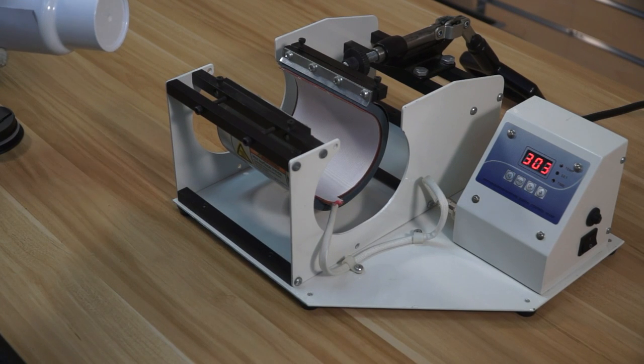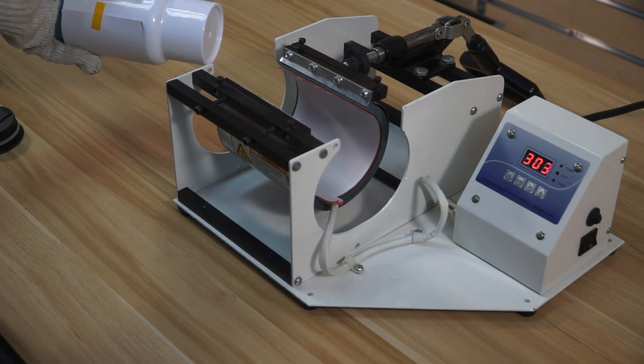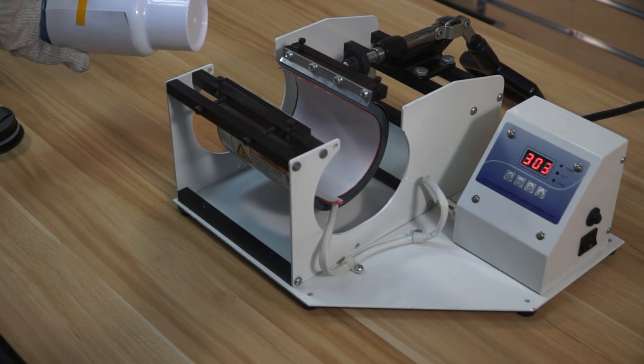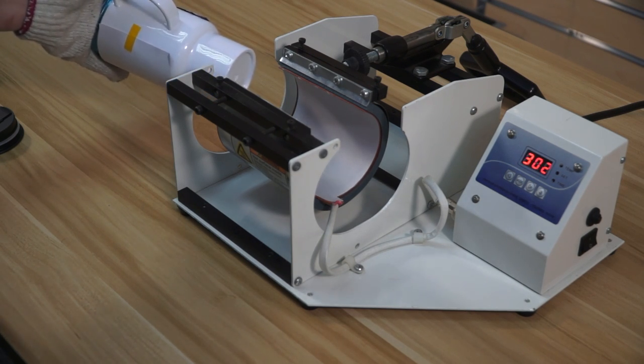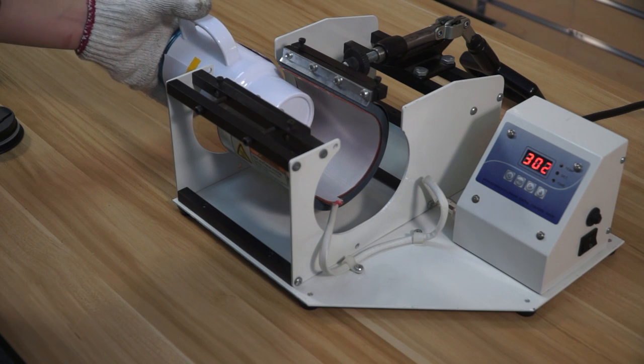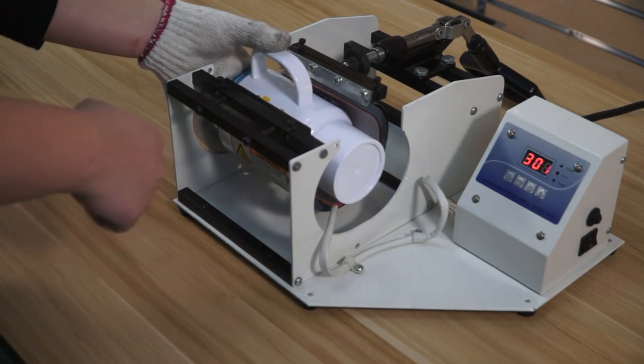And then, as you can see, the temperature of the mug press has reached 300 Fahrenheit degrees. Now we can insert the mug in the wrap.